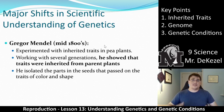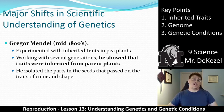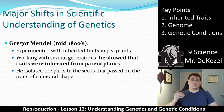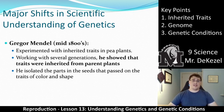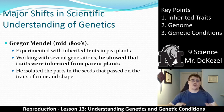Over the years there have been some major shifts in scientific understanding of genetics. Originally, Gregor Mendel started with a really good theory where he experimented with inherited traits in pea plants. He showed that each trait was inherited from the parents — if you bred two pea plants with purple flowers together, you could only get purple flowers. He isolated the parts in seeds that passed on the traits of color and shape, proving that traits come from parents through sexual reproduction.